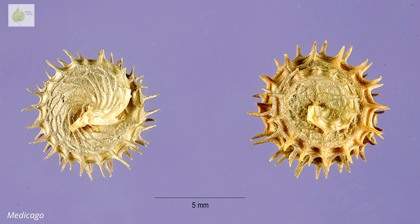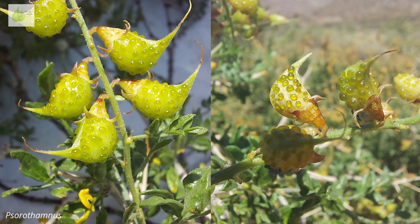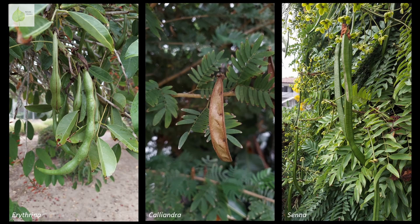However, as always, there are exceptions and deviations from that typical pea pod look — such as in this Medicago, whose legume is coiled like a snail, or the pod of this indigo bush, which is inflated and covered with blistery glands. But overall, even though we're not seeing clear similarities in flowers, we can readily see the repeating pattern in fruits.